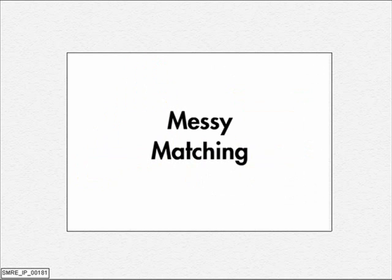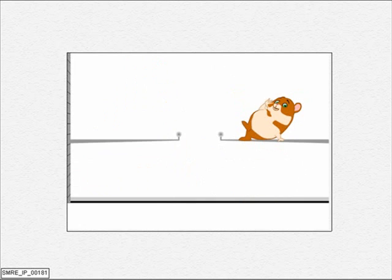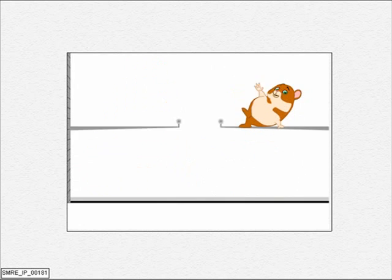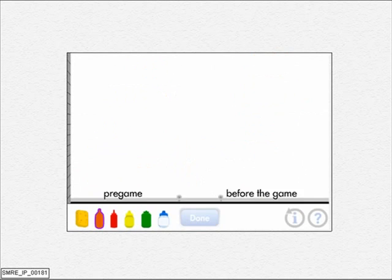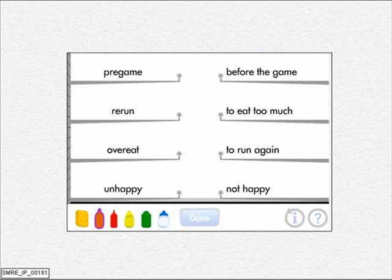Messy matching. Click each word, and then match it by clicking its meaning. When you have matched all the words and their meanings, click Done.